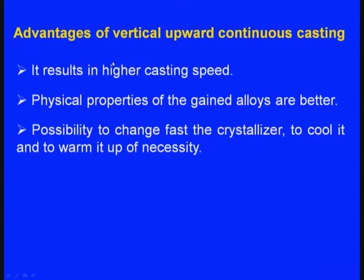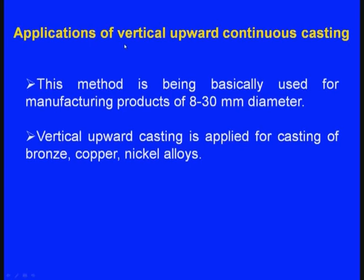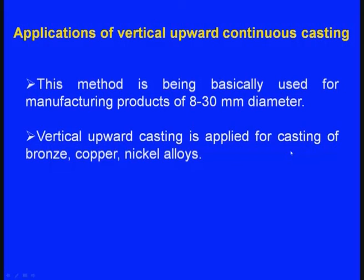The advantages of vertical upward continuous casting: it results in higher casting speed, physical properties of the cast alloys are better, and there is the possibility to change the crystallizer quickly to cool or warm it as necessary. Applications: this method is basically used for manufacturing products of 8 to 30 millimeters diameter — for smaller diameter components or bars, this method can be successfully used. Vertical upward casting is applied for casting of bronze, copper, and nickel alloys.